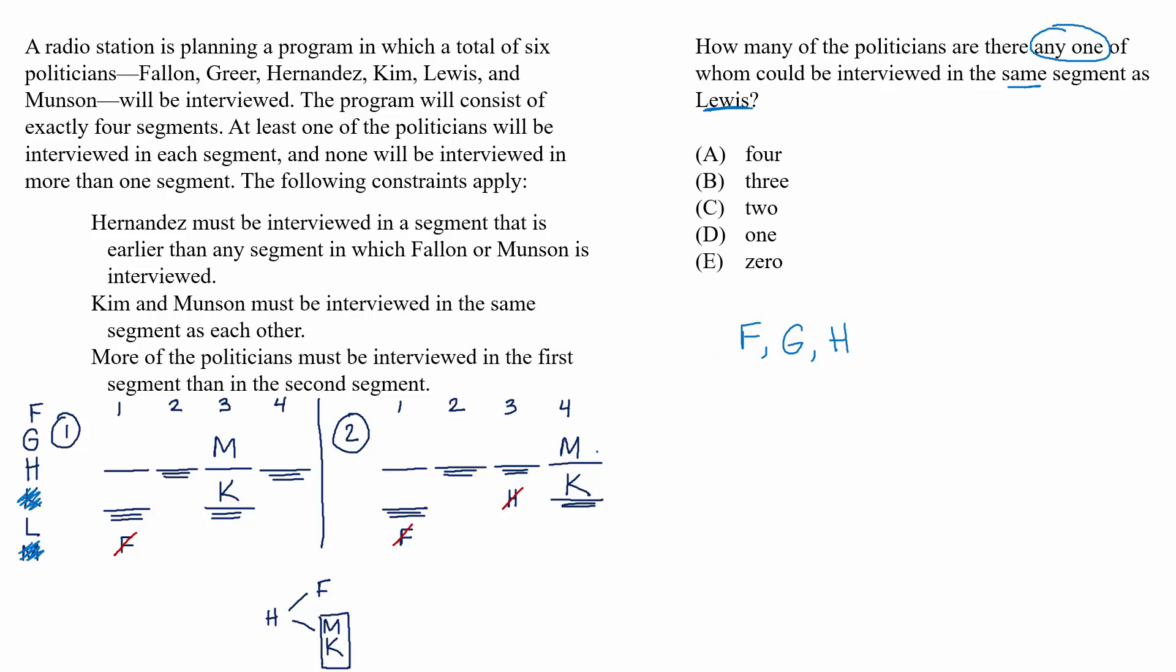Well, it's definitely not Fallon, right? Because we deduced already in the setup that Fallon can never be first. So let's look at our scenarios to figure out the other politicians. In scenario one, we can deduce that Hernandez or Greer could be paired with Lewis.